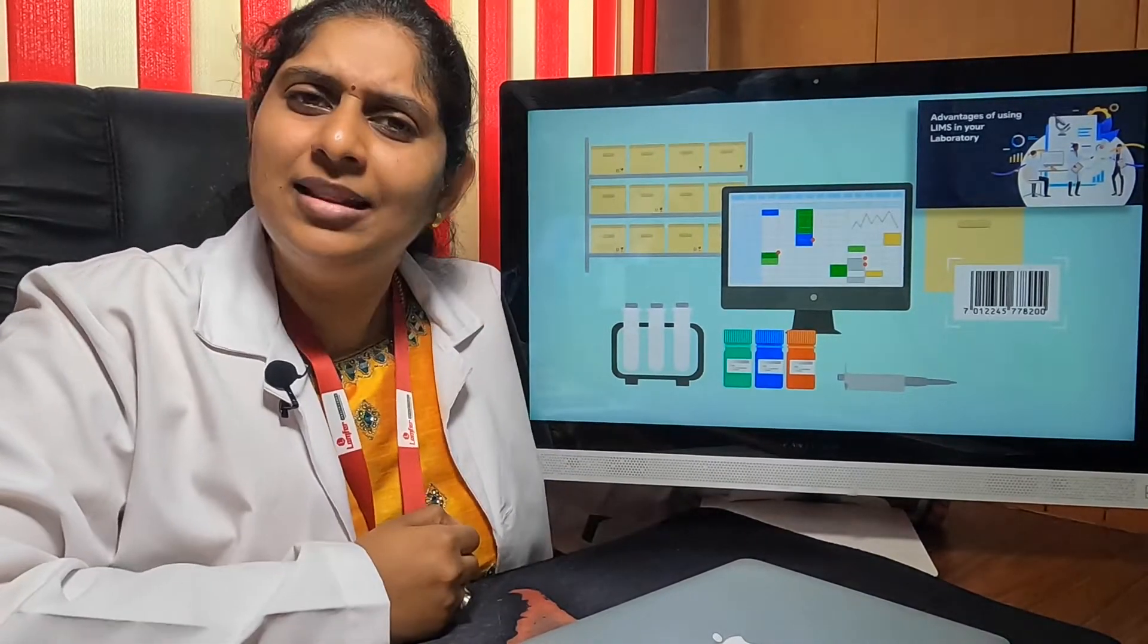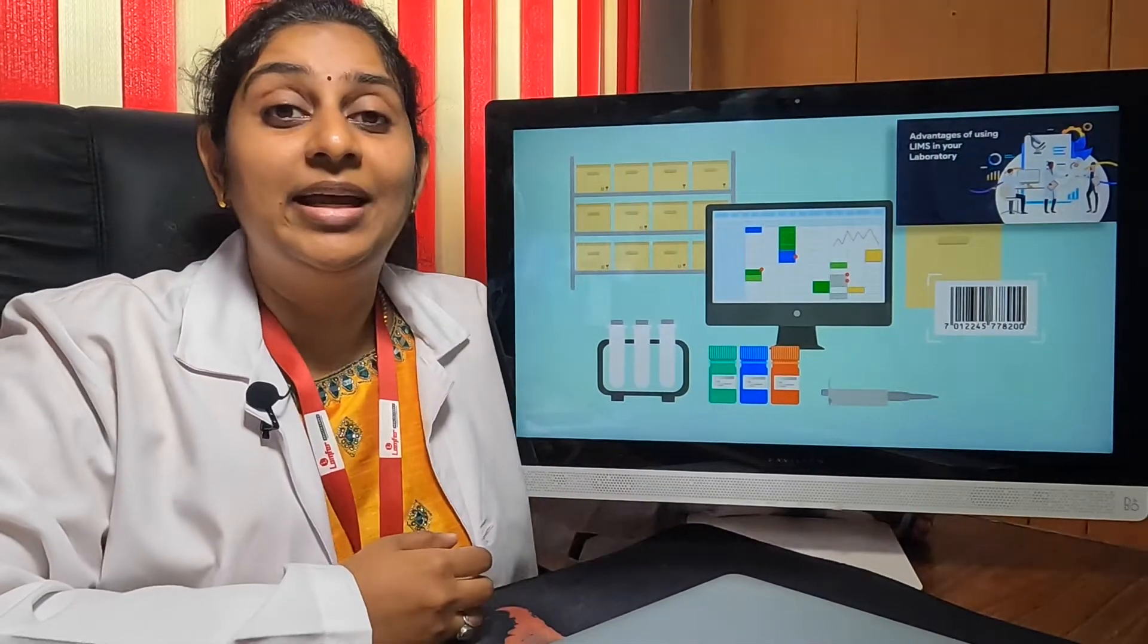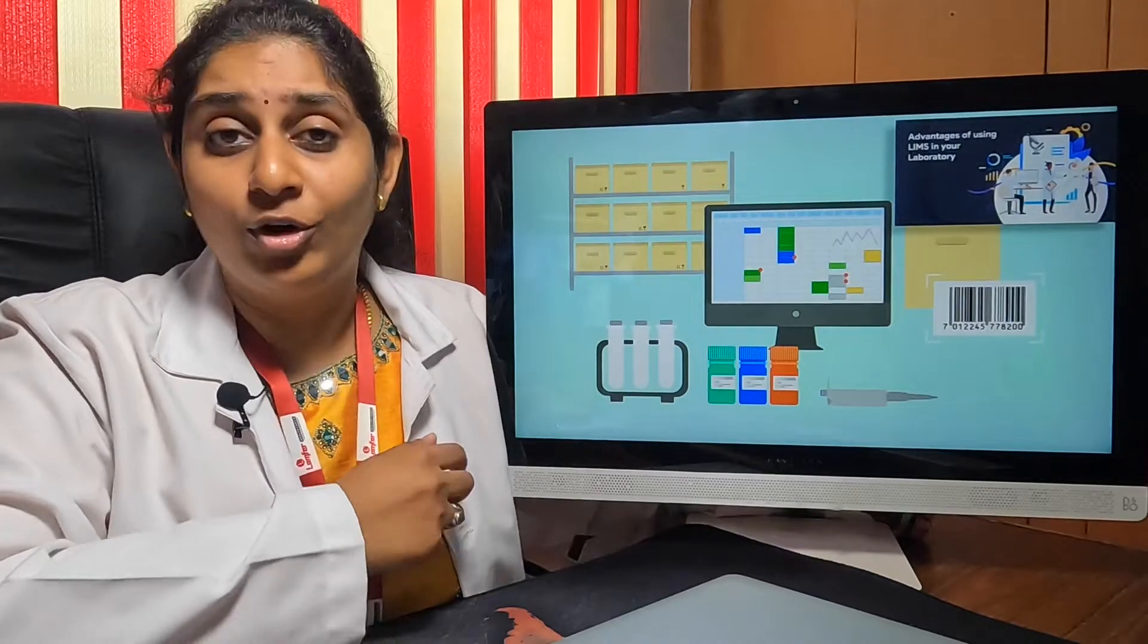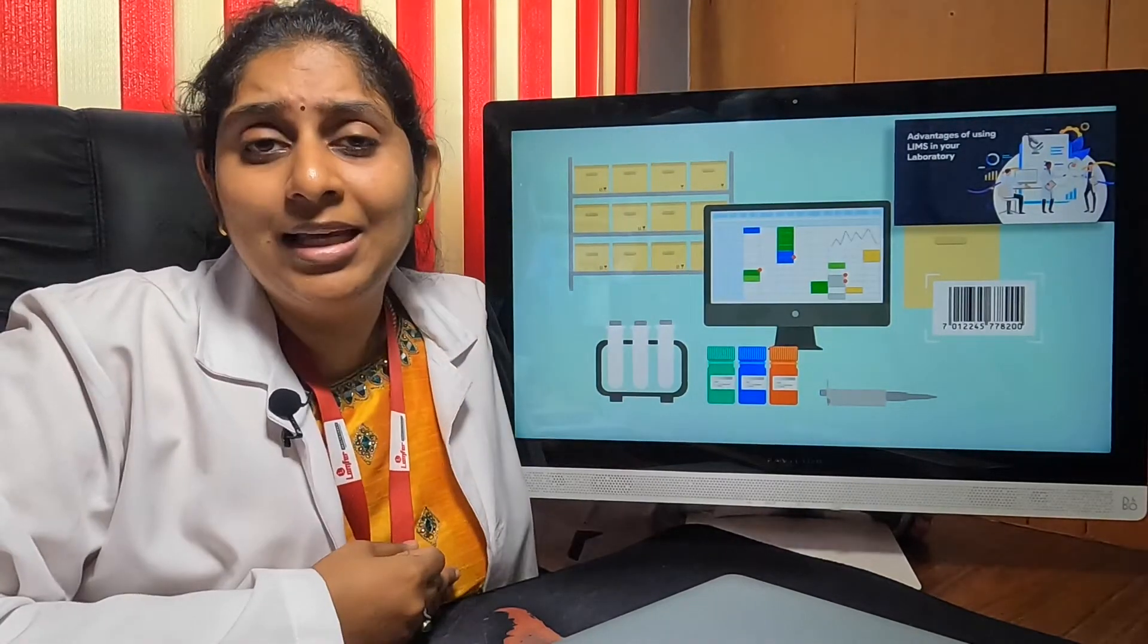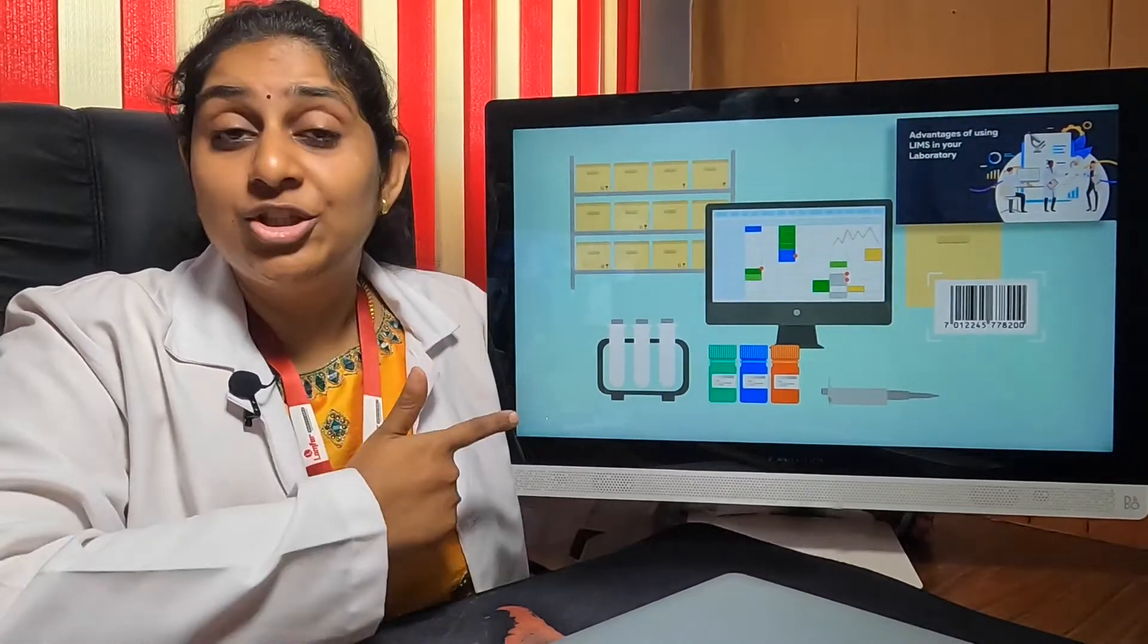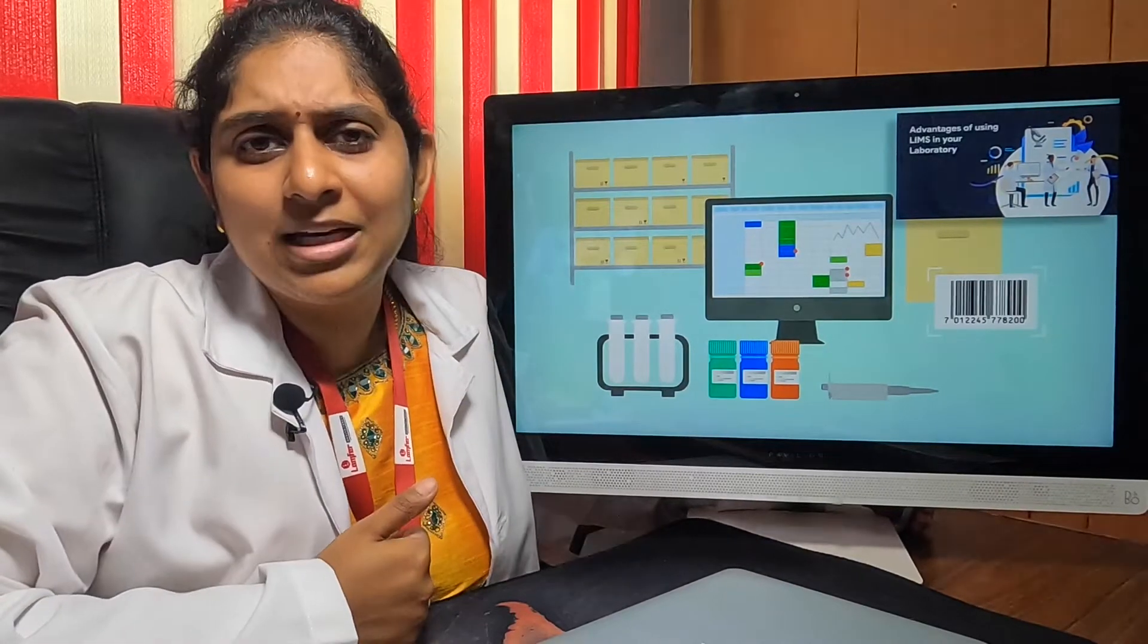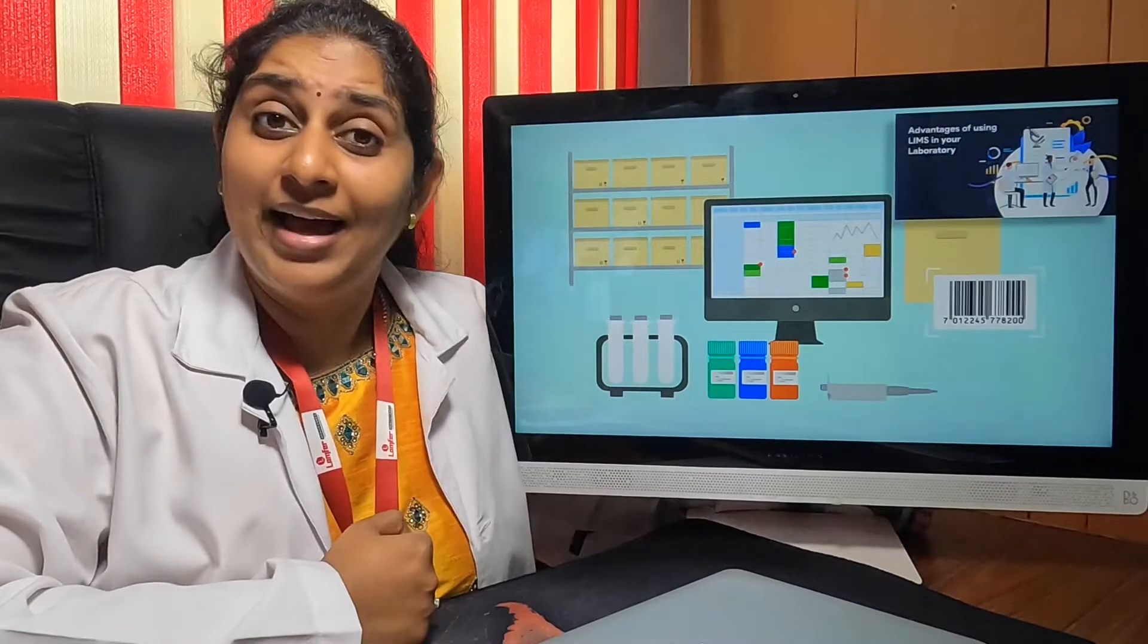Again, a small laboratory can either be of a collection center model or it can be a small laboratory in which very few minimal instruments or equipments are involved. When you have a collection center model, three important things you need in the LIS software. First, is the billing, the patient registration and the report generation. These are the four most important things in a collection center model which the LIS should have.